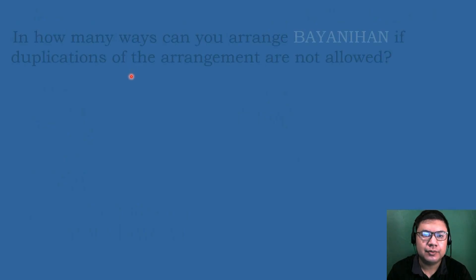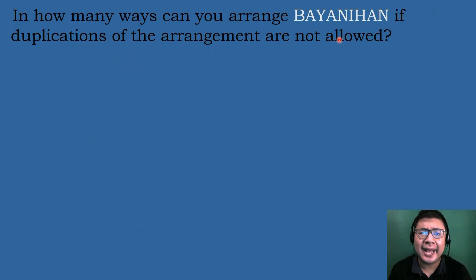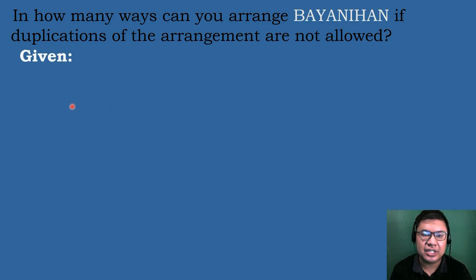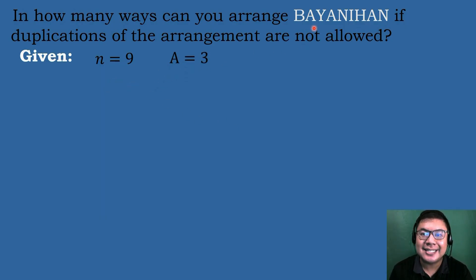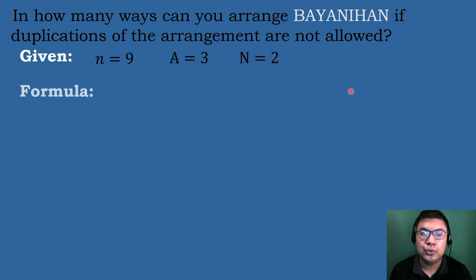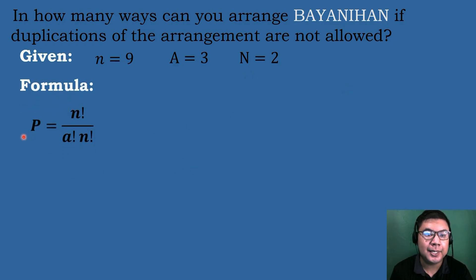Let's have our next example: In how many ways can you arrange 'bayanihan' if duplications of the arrangement are not allowed? This is also an example of distinguishable permutation. The value of N equals 9: 1, 2, 3, 4, 5, 6, 7, 8, 9. Letter A is repeated 3 times, so A equals 3. Letter N is repeated 2 times, so N equals 2. The formula is: P equals N factorial over A factorial times N factorial.